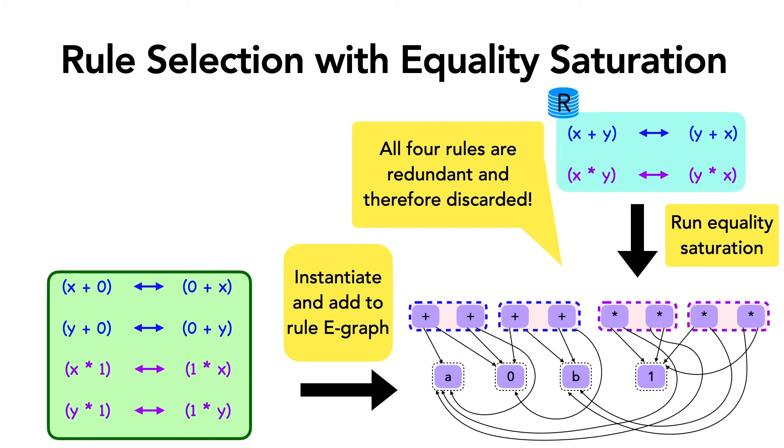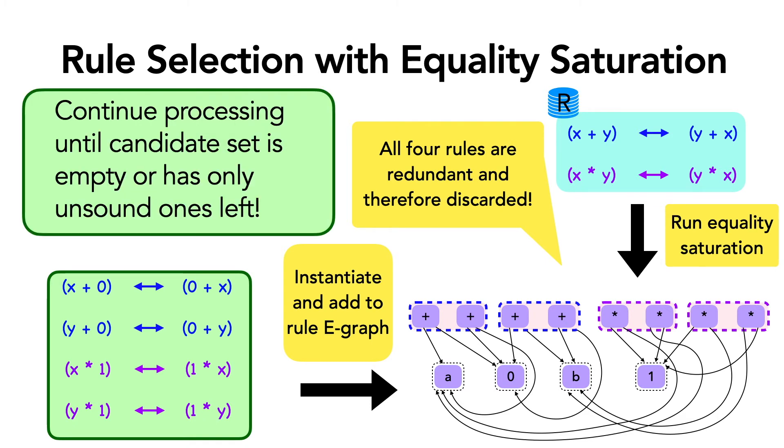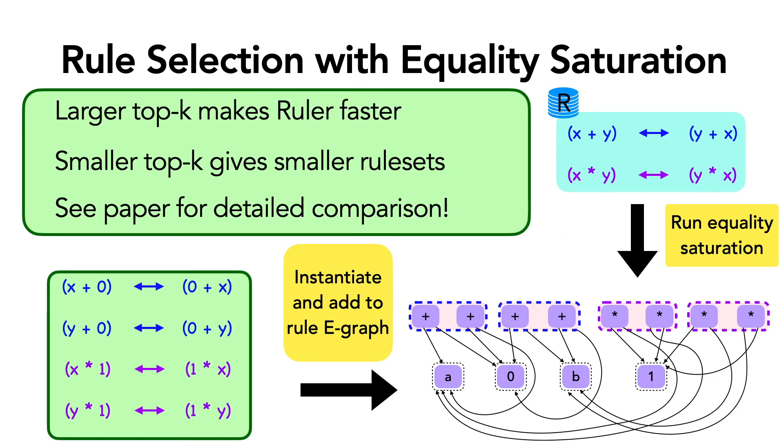If so, then the candidates are discarded since they are redundant. So in this way, Ruler will continue processing the candidates in the candidate pool until all of the candidates have been processed or the ones left are all unsound. Our paper discusses more details on how the choice of top K affects the rule set quality and also the performance of Ruler, so I encourage you to take a look at that.